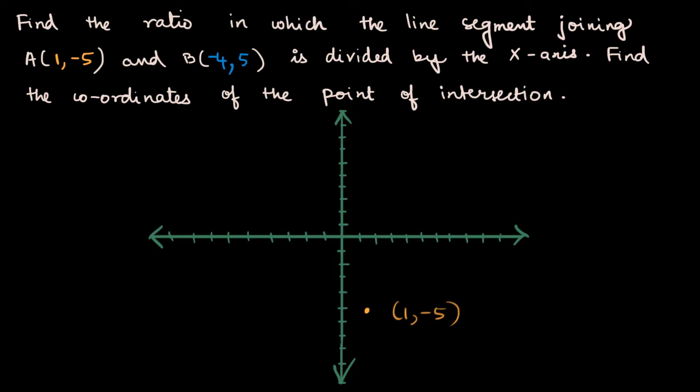And I need minus 4 comma 5. That's 1, 2, 3, 4 - four steps to the left. And then 5 above because it's plus 5: 1, 2, 3, 4, 5, somewhere over here. Minus 4 comma 5.